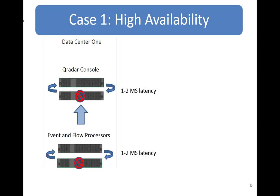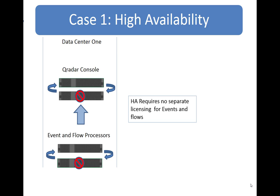The same is true if I lose the event or flow processor. If that goes down, every record is duplicated in near real-time continuous action so that even someone using the system is not going to see a failure happen. There might be a blip and they will have to log back into a console, but that's it. If money were no object, we would all use HA. There is no separate licensing for events in HA — if you have licensing for the top box, you have licensing for your bottom HA box.